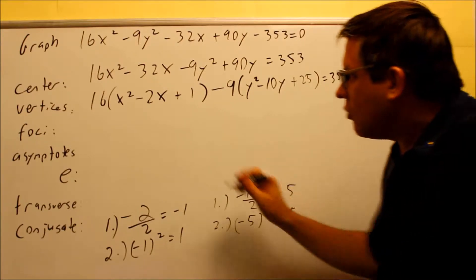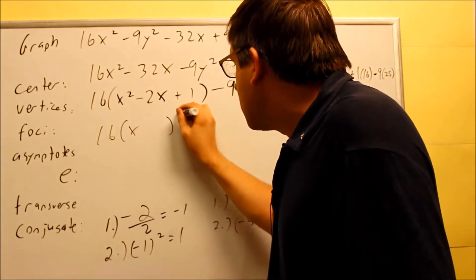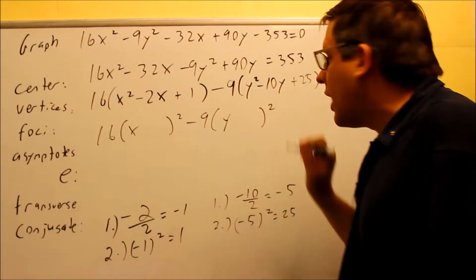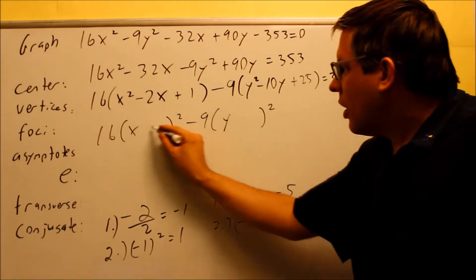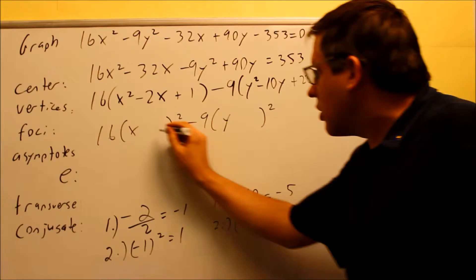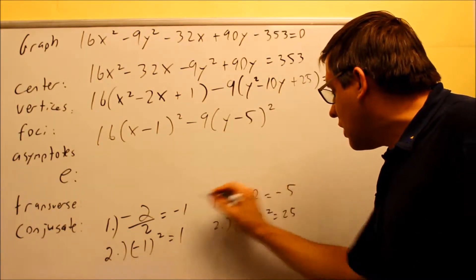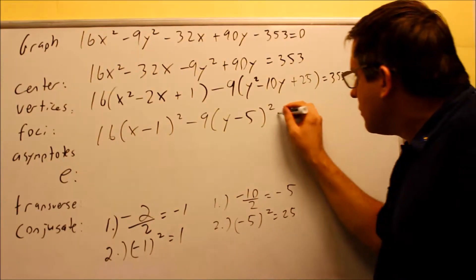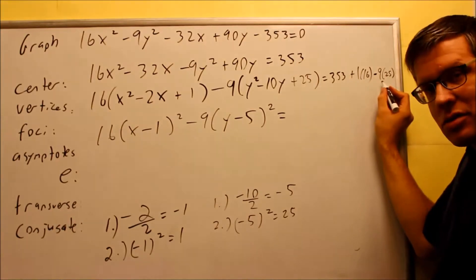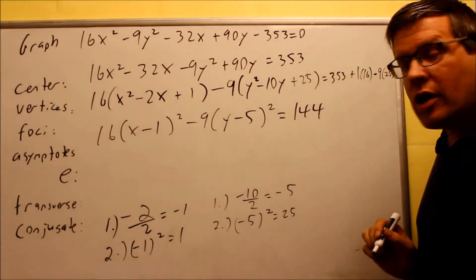Now that we have that complete, we're ready to turn these into quantity squares. We get x quantity squared with minus 1 inside, and minus 9 times y quantity squared with minus 5 inside. The number inside each blank is the answer from step 1 for each group. Over on the right side, adding 353 plus 16 minus 9 times 25 gives us 144.